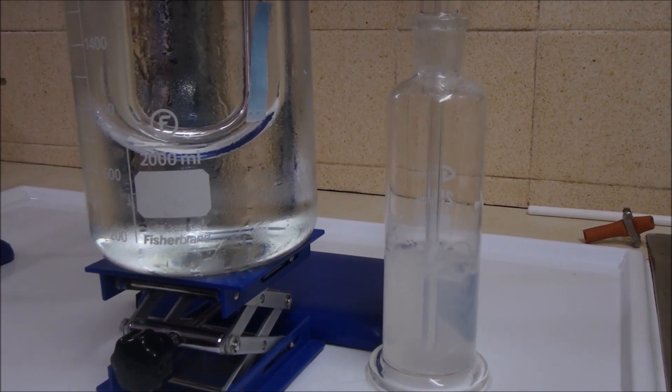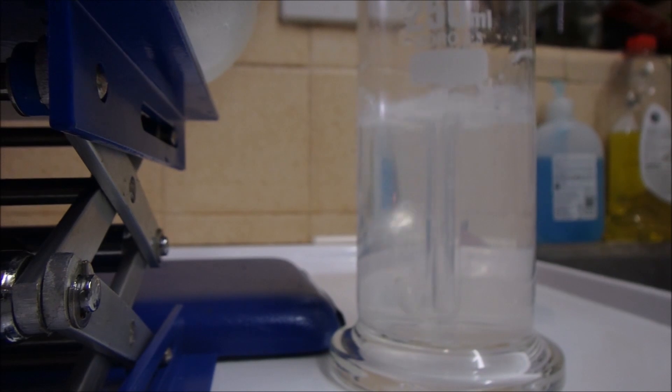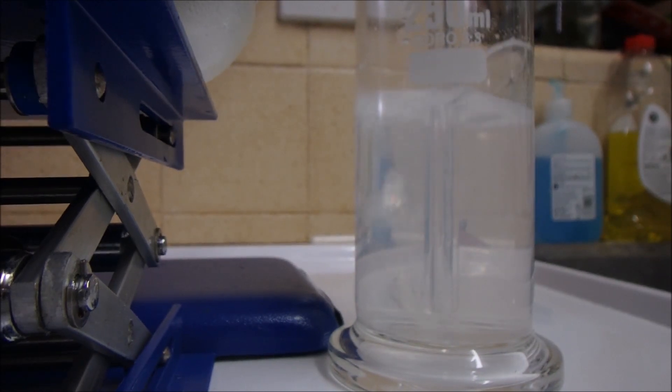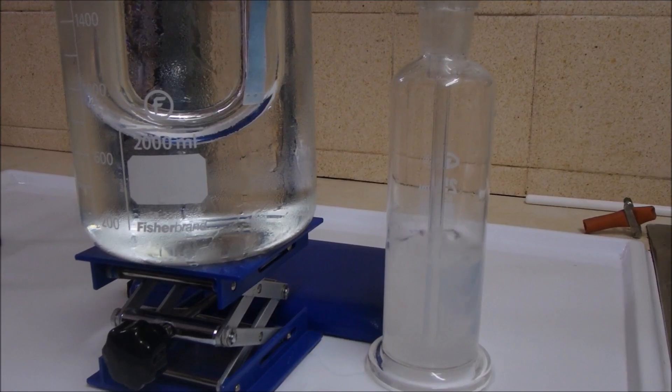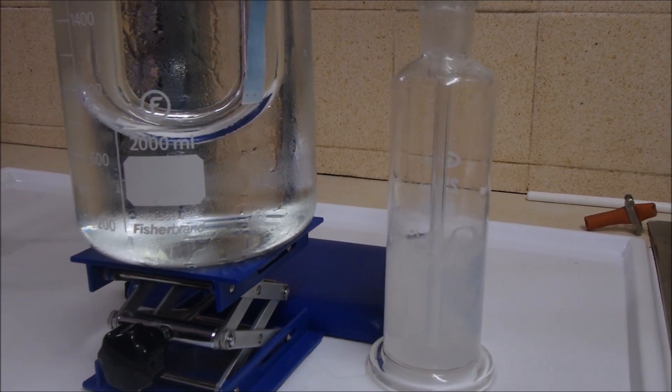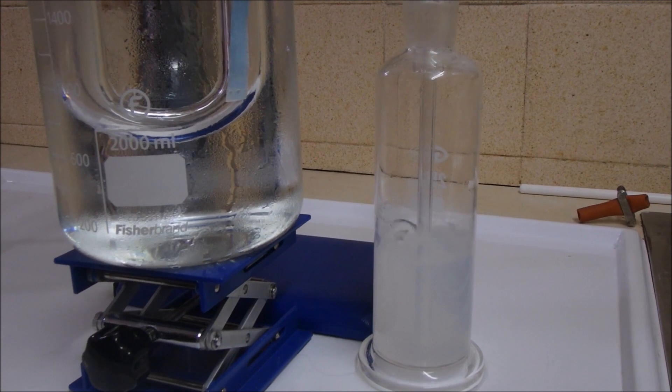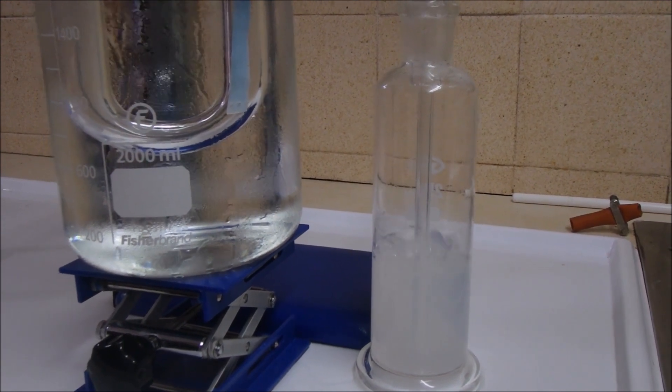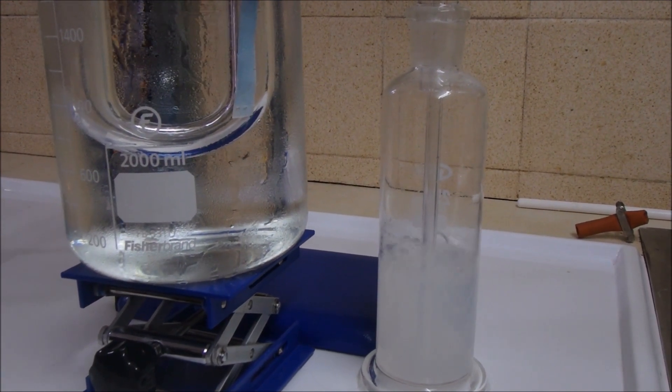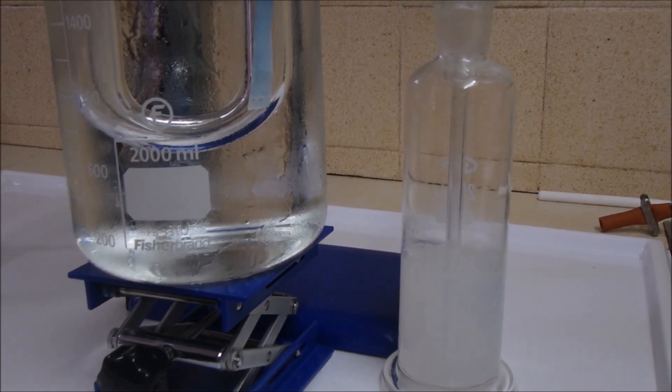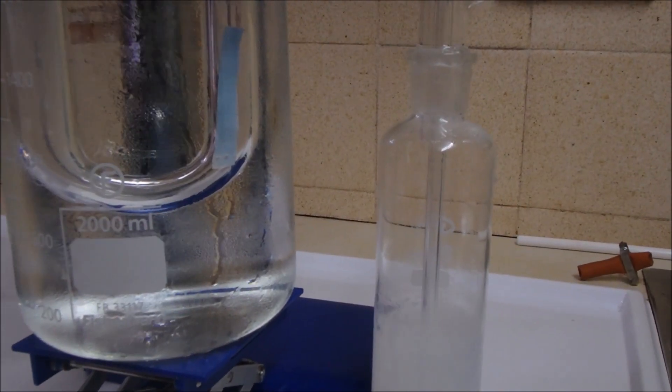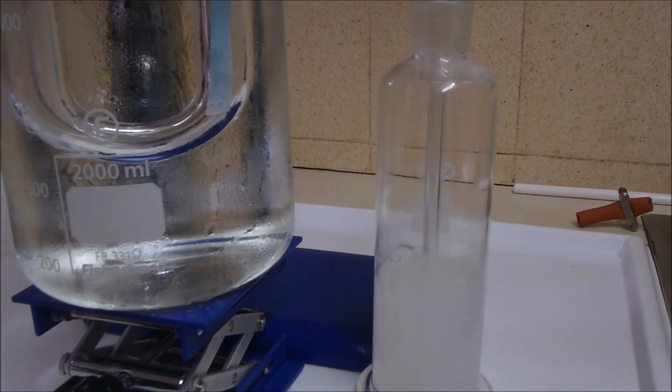So I can see the lime water starting to turn cloudy. And see if we're getting the water detected by the blue cobalt chloride paper. It's not doing as well as before, simply because I've managed to get the last one a little bit lower. But the carbon dioxide definitely we've got.